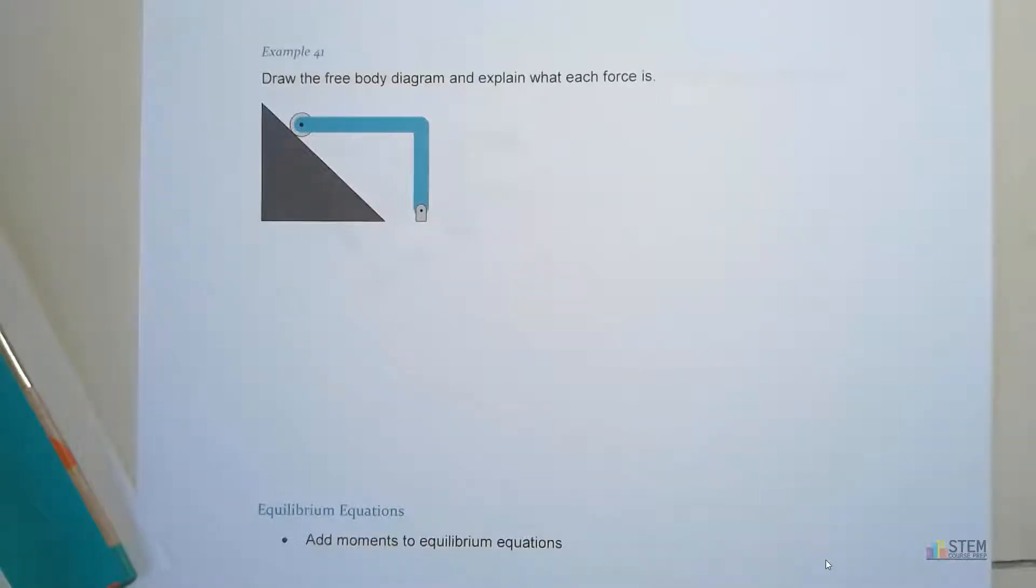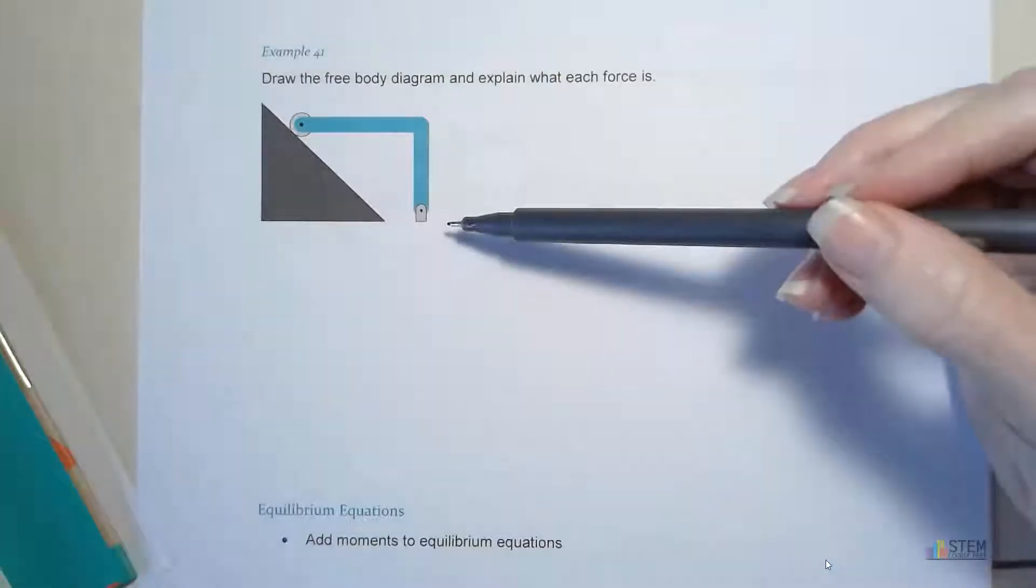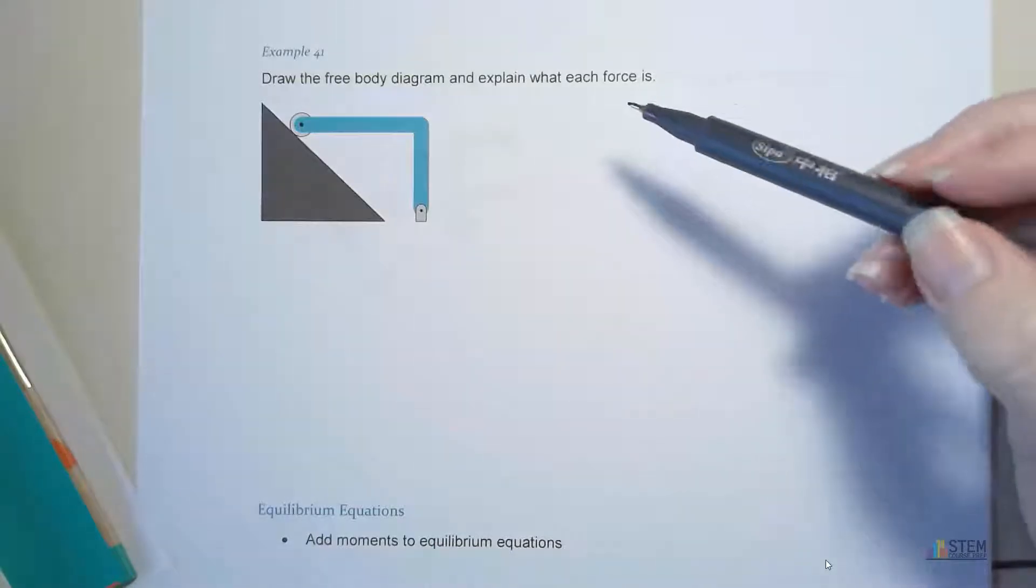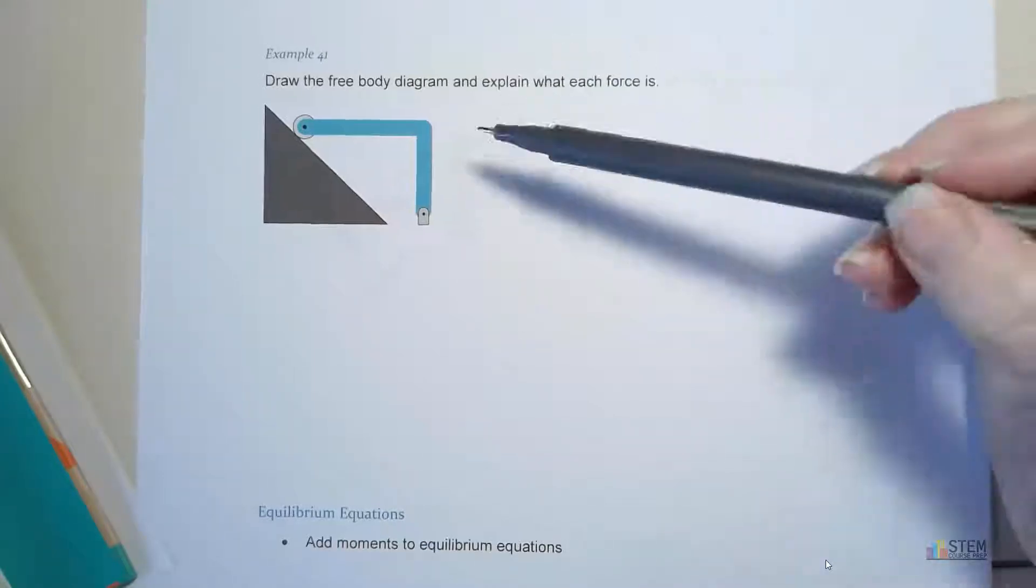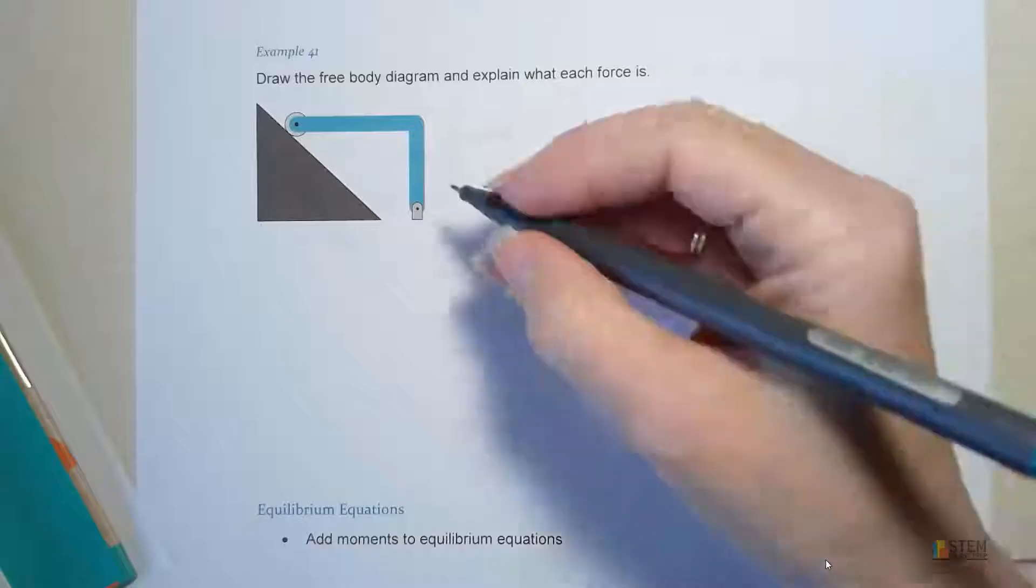Let's do our first example for a free body diagram for a rigid body. We're going to do many more of these free body diagrams, so we're going to start out with a pretty simple one right now. What we want to do, all we're going to do is draw the free body diagram, and then we're going to explain what each of the forces is. Now, you'll see what we've got here.